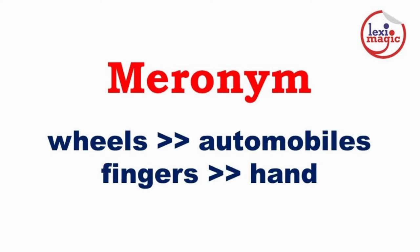Meronym is a part of a whole that is used to define all the constituent parts in total. For example, wheels is a common term used for automobiles. Fingers can be used as a meronym for hand.